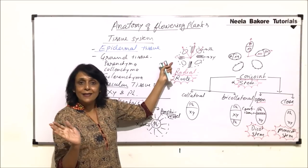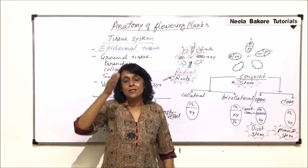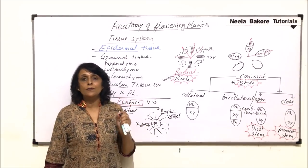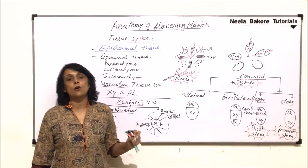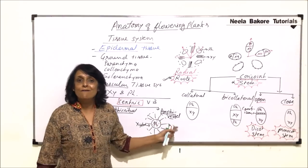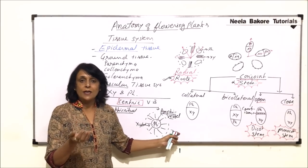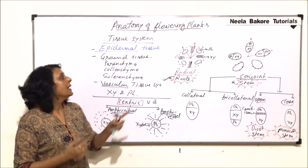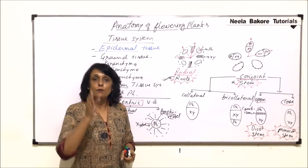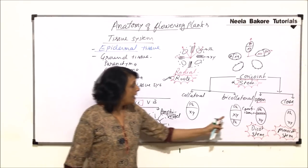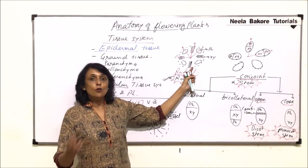If xylem and phloem are arranged alternately in the form of alternate bands at different radii, we call it radial arrangement. If they are present on the same radius, the arrangement is termed conjoint. Special terms like conjoint, collateral, open, and closed vascular bundles are important for every competitive exam. If we see a section with alternating xylems and phloems, it is a root; if xylem and phloem are on the same radius it is a stem; if there is cambium in between it is dicot stem, and if there is no cambium it is monocot stem.